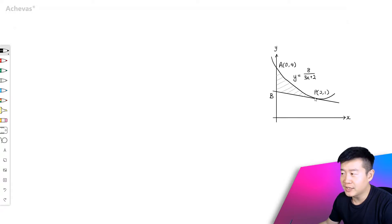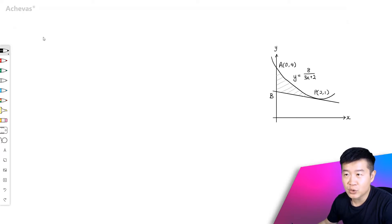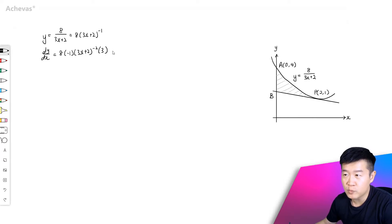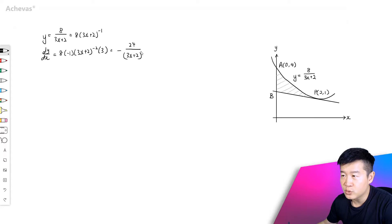So let's first try to find the gradient of this line. To do that, we will differentiate this curve. So y is equal to 8 over 3x plus 2. We can rewrite this as 3x plus 2 to the power of minus 1. So dy/dx is going to be equal to 8 times minus 1, times 3x plus 2 to the power of minus 2, times 3 — chain rule. And this is equal to minus 24 over (3x plus 2) squared.